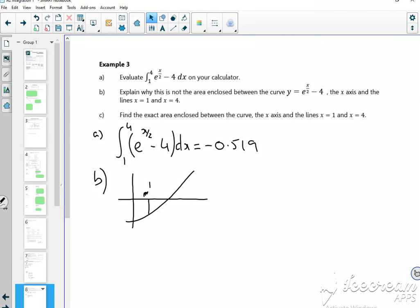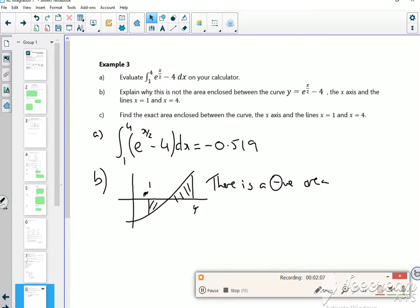So there's my 1, there's my 4. So it says explain why it's not the area. It's because there is a negative area that affects the overall area. There. Okay, so that's why.